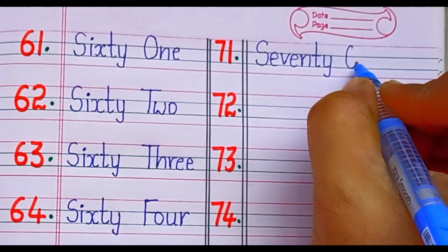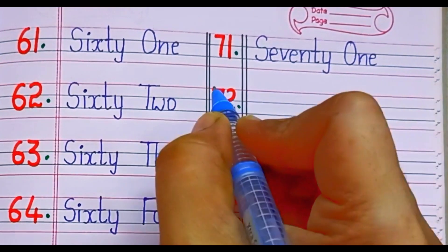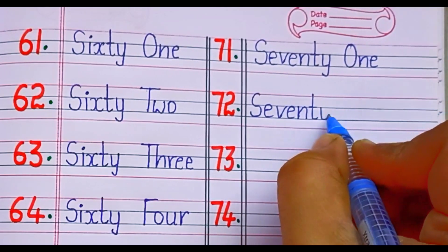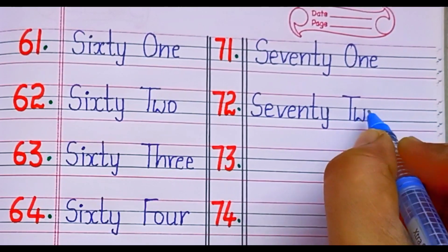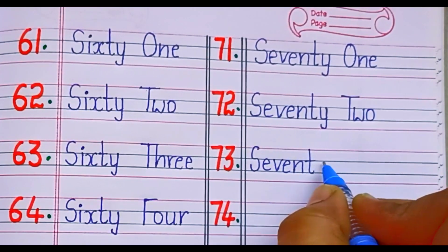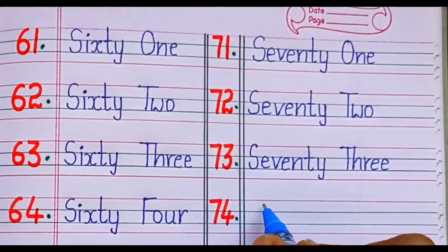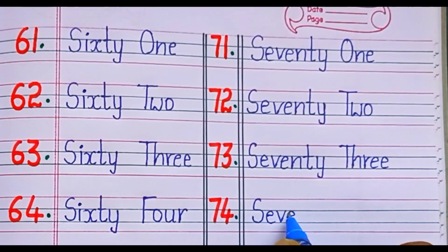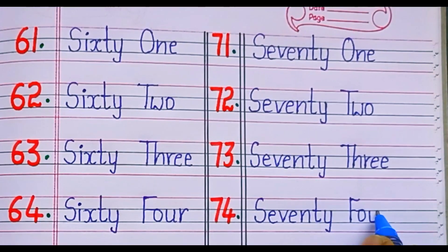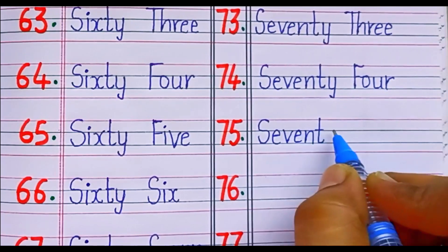SEVENTY-ONE: S-E-V-E-N-T-Y O-N-E, 71. SEVENTY-TWO: S-E-V-E-N-T-Y T-W-O, 72. SEVENTY-THREE: S-E-V-E-N-T-Y T-H-R-E-E, 73. SEVENTY-FOUR: S-E-V-E-N-T-Y F-O-U-R, 74. SEVENTY-FIVE: S-E-V-E-N-T-Y F-I-V-E, 75.